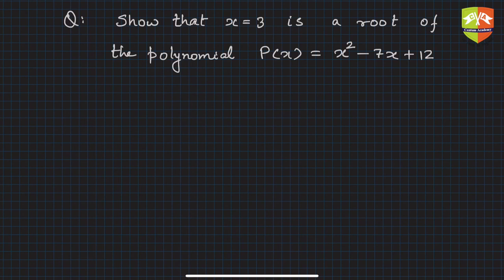What you need to do is simply find out P(3) and check whether it is coming out to be 0. If P(3) is 0, then 3 is the zero or root of the polynomial P(x). So what is P(3)? P(3) is 3² - 7 times 3 + 12. Simply substitute x by 3. So what is this? 9 - 21 + 12, which indeed equals 0.